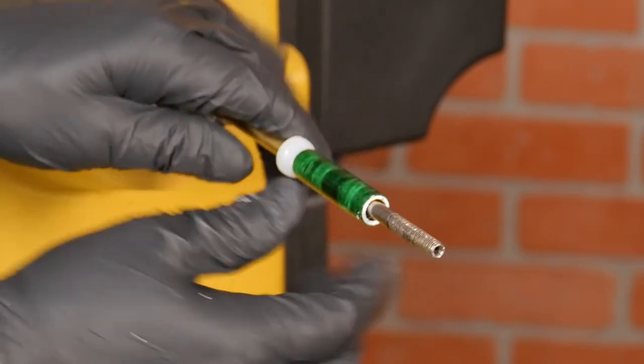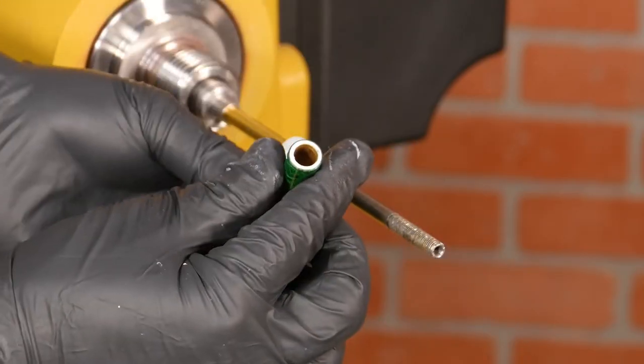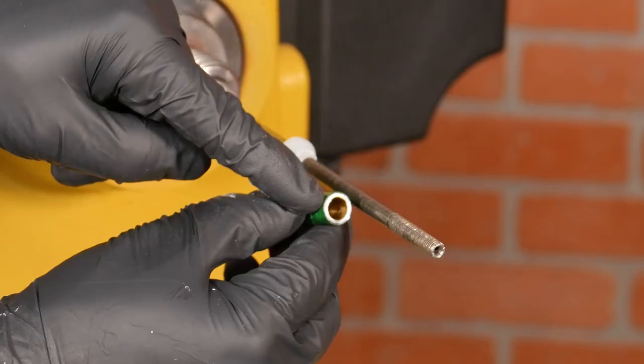Once we're finished buffing, remove the blank from the lathe. You may find that there's a little glue extending beyond the end of the blank and this is easily fixed.